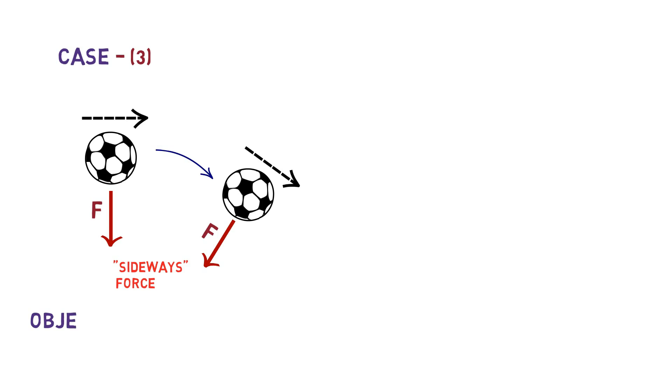Take a case when the force is applied perpendicular to the velocity of the object. Let us call this a sideways force. If only a sideways force is applied to an object, the object will neither speed up nor slow down. It just turns, or to be precise, the object changes direction in this case.